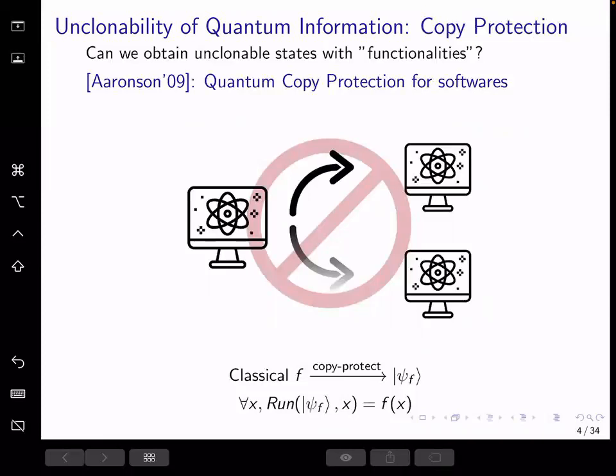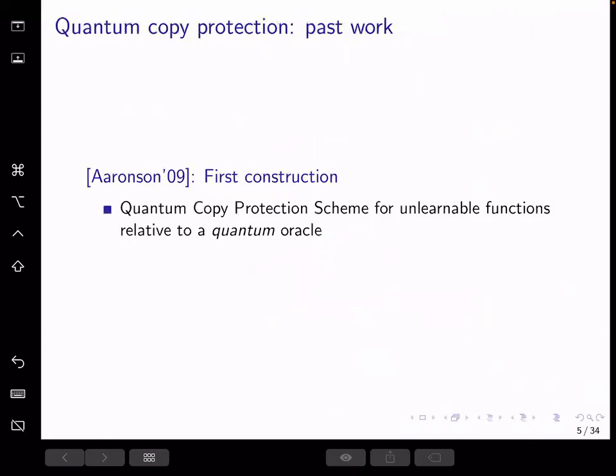But the polynomial time bounded adversary cannot turn this state into two states that both compute the function f correctly. Arison also gave a first construction for copy protection for any unlearnable function using a quantum oracle.